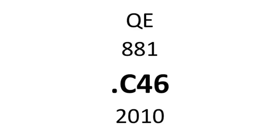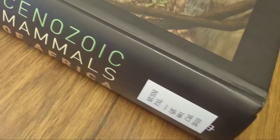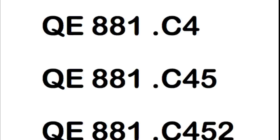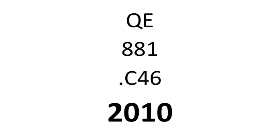But this line can be tricky. Remember that decimal point? The number on this line is a decimal number — it's not 46, it's .46. That means you will find it on the shelf within all the QE 881s after C.4500 and before C.5. The last line of this call number, like most Library of Congress call numbers, gives the year of publication: 2010.